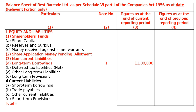Then B is deferred tax liabilities net value, C is other current liabilities, D is long-term provisions. Number 4 is current liabilities: under this A is short-term borrowings, B is trade payables, C is other current liabilities, D is short-term provisions, then totaling — it can't be totaled as the detail of share capital etc. is not given.